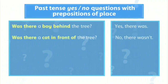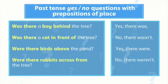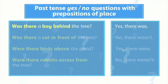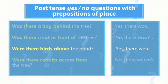To ask if a person or thing was in a certain location in the past, we use yes or no questions with was there or were there, then the preposition of place. Was there a boy behind the tree? Yes, there was. Was there a cat in front of the tree? No, there wasn't. Were there birds above the pond? Yes, there were. Were there rabbits across from the tree? No, there weren't.